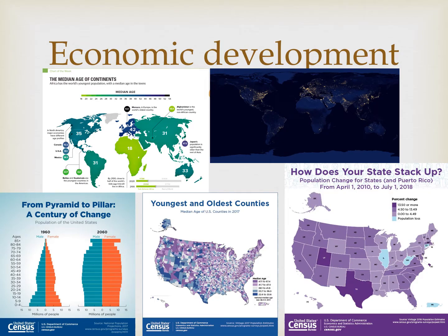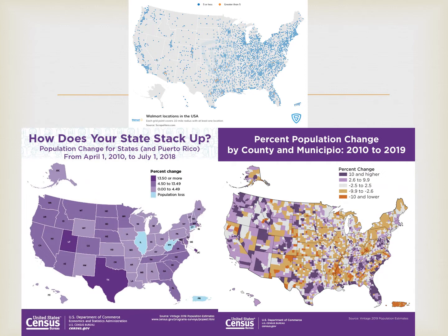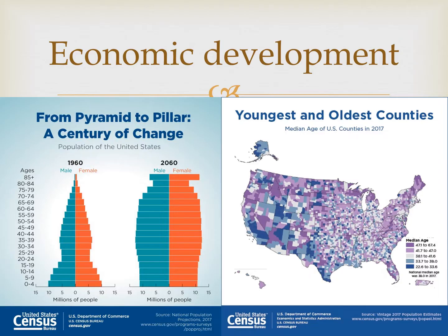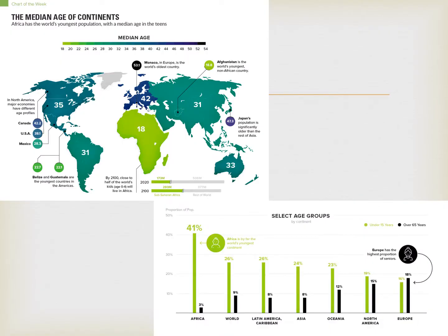Let's start with a conversation about businesses and economic development. Walmart will use census data to determine where population is increasing and where it might choose to build new stores. Identifying areas with expanding population could be helpful — more people means more potential customers. But the United States, along with many developed countries, have populations that are getting older. So maybe you want to start a private nursing home and you might want to know which areas are likely to need them.